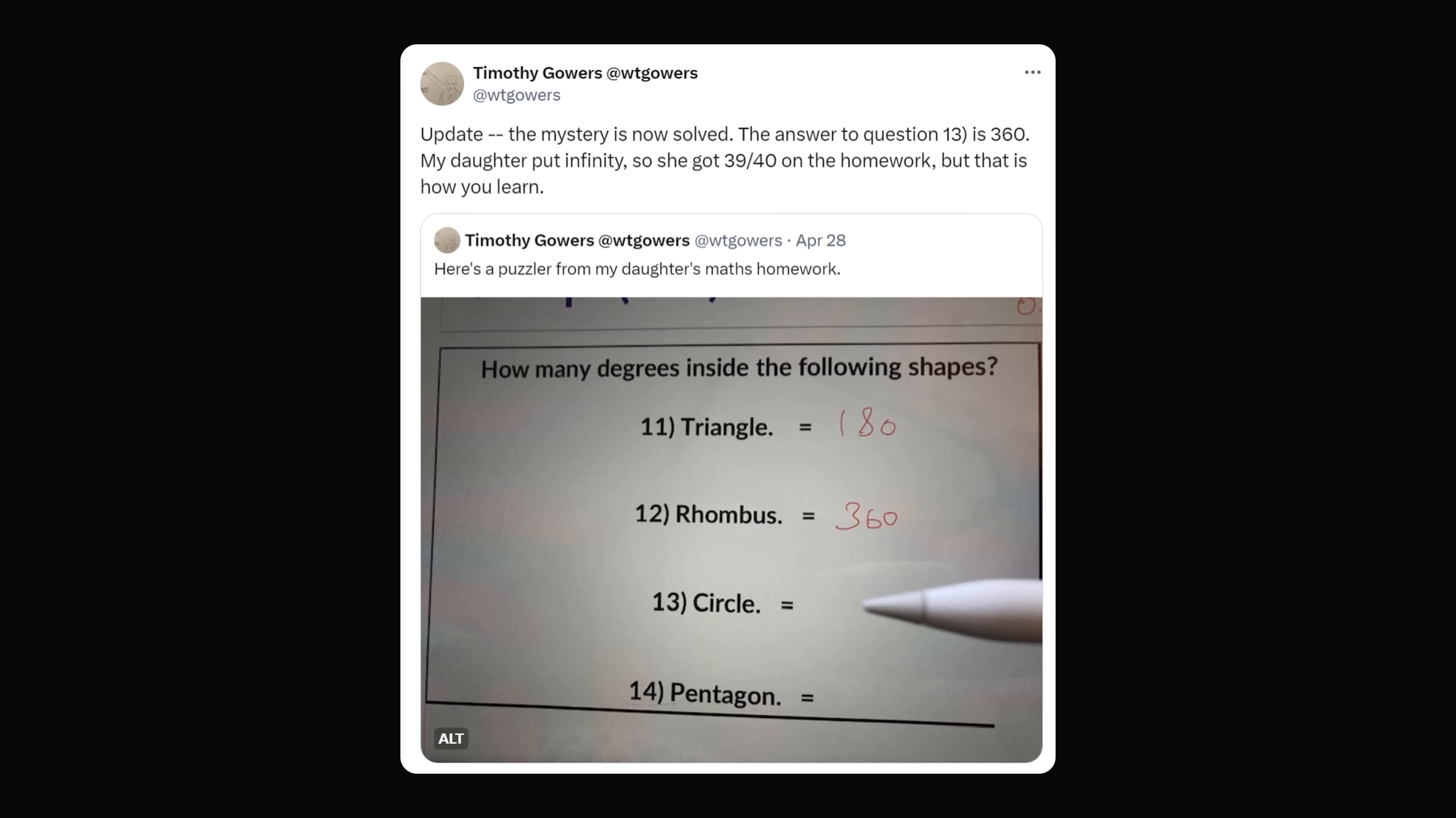So now let's turn to the homework question. Timothy Gower's daughter did put infinity as the number of degrees inside the circle. He then posted an update a few days later. Update! The mystery is now solved!